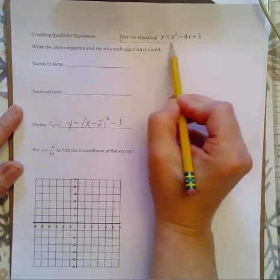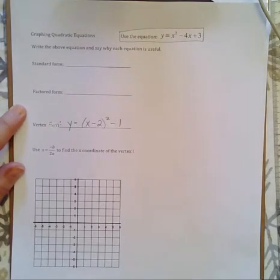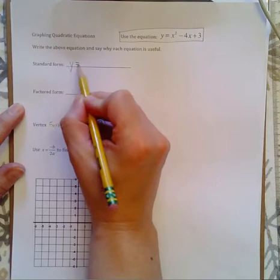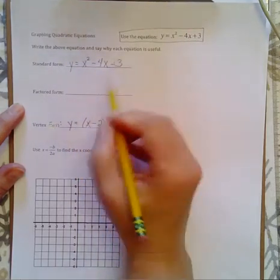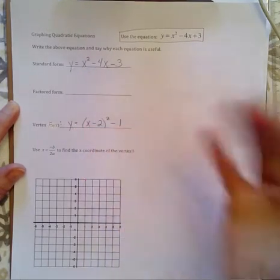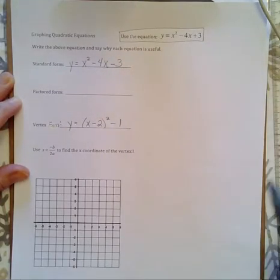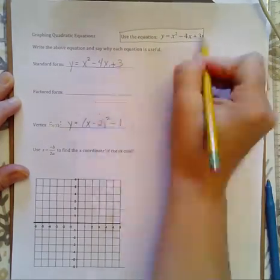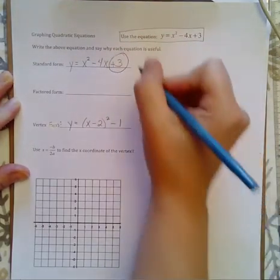So we're going to start off with this guy up here. Here's our equation, and that equation is given to us in standard form. That's your ax squared plus bx plus c equals y. So that is your standard form. When we have an equation given to us in standard form, it gives us this guy here.